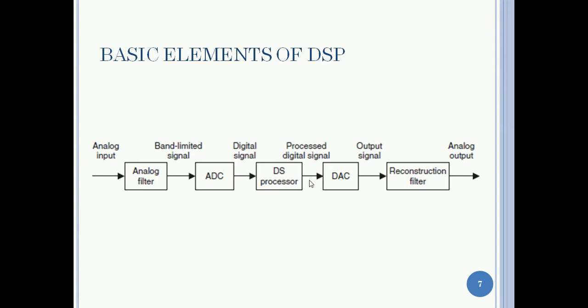The output of the digital signal processor block is digital in nature. Whenever we need retrieval in the form of an analog output, we add a digital-to-analog converter block followed by a reconstruction filter. The output of the reconstruction filter will give an approximated analog signal, which will be a processed signal with better quality compared to the original analog input.